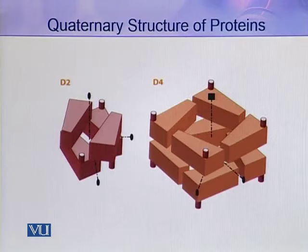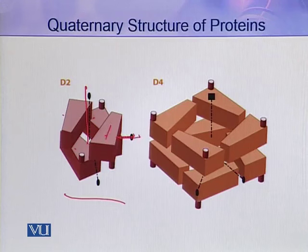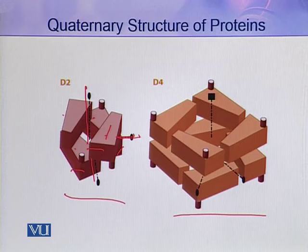As you can see in this diagram, four protomers are present, but they have more than one rotational axis. One rotational axis applies to two of the protomers, and another rotational axis applies to the other two. Normally two rotational axes are present. As the number of protomers increases, this symmetry is called D4 dihedral symmetry, in which four protomers are present with at least two rotational axes.